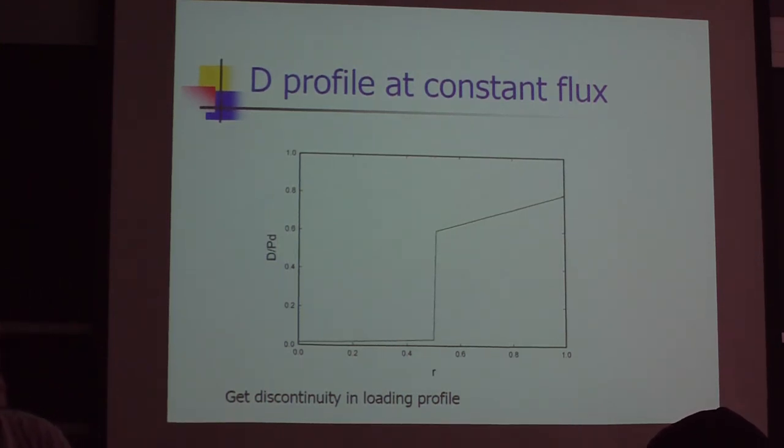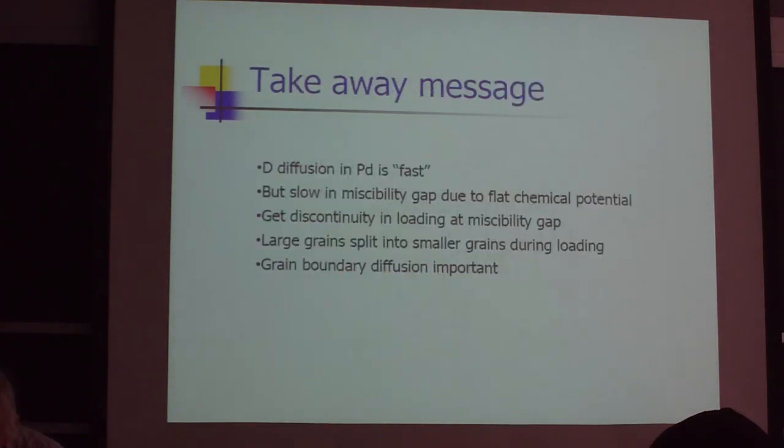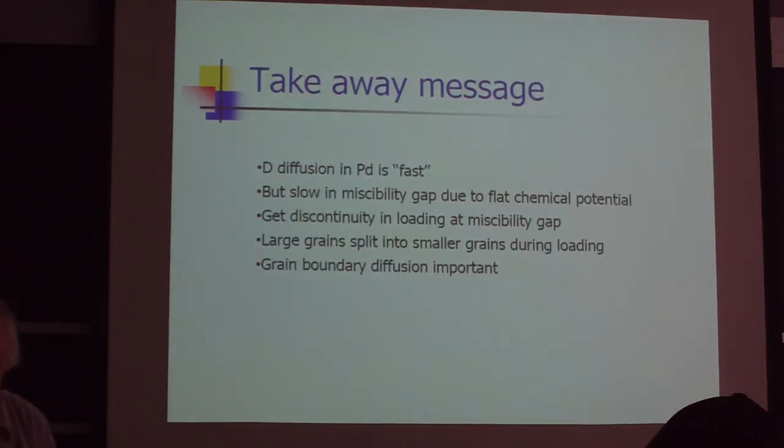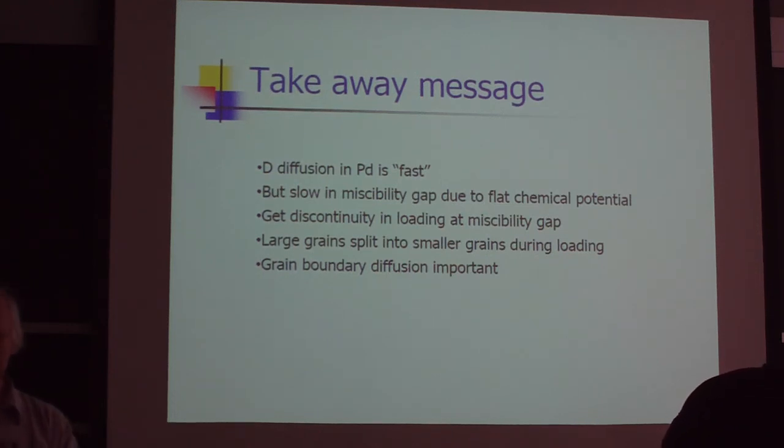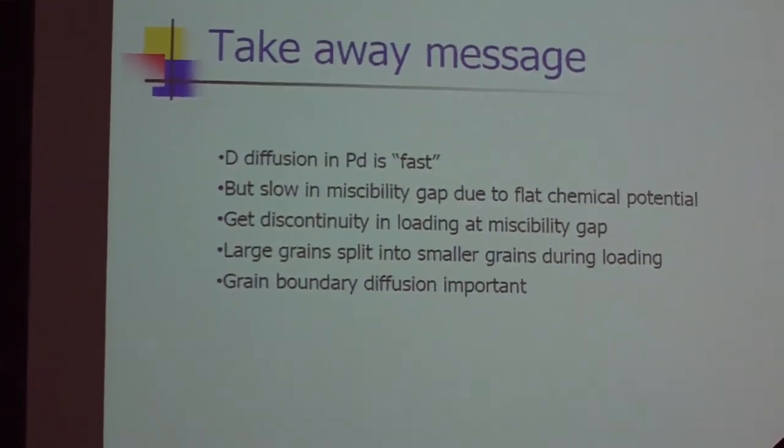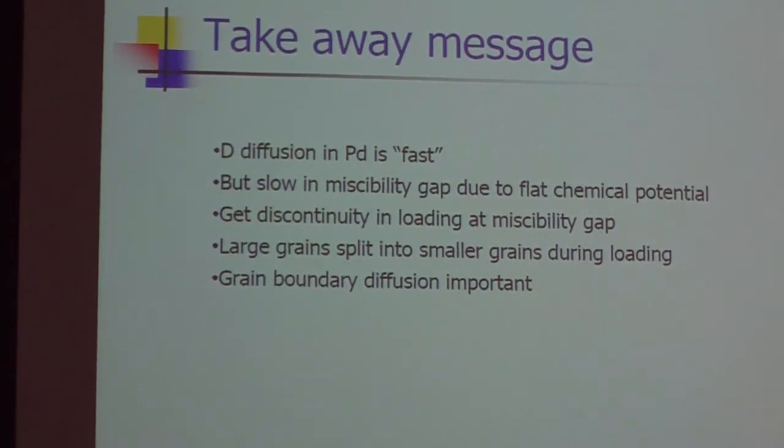So the amount of damage done is enormous. Some people in the cold fusion business said, well, let's go above the miscibility gap, load at high temperature, to avoid this effect and avoid the grain boundary effects. That's my takeaway message. Grain diffusion is fast. It's slow in the miscibility gap due to chemical potential flatness. This leads to a discontinuity of the loading profile for transient loading. It causes grains to form. Grain boundary diffusion is important.